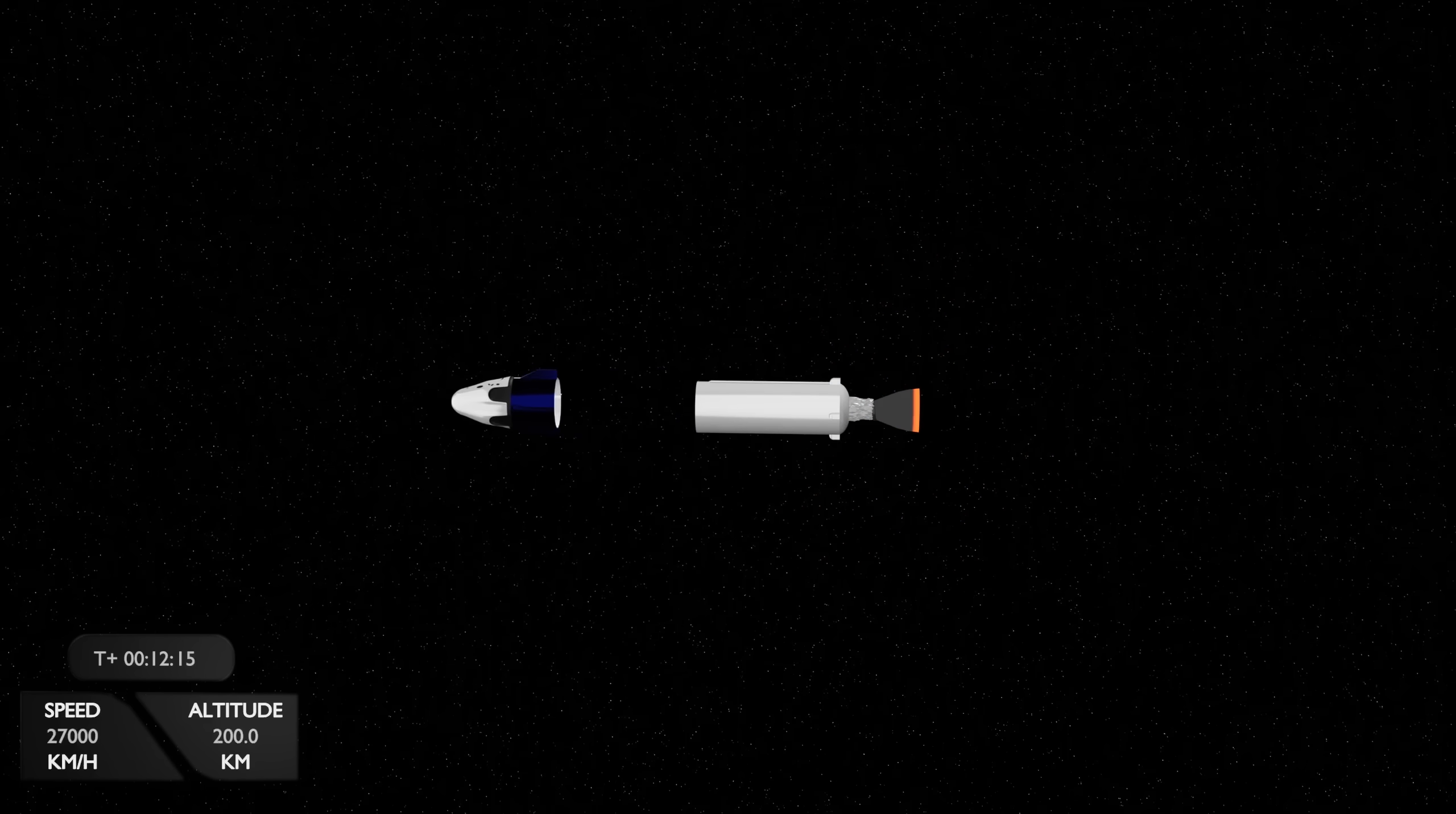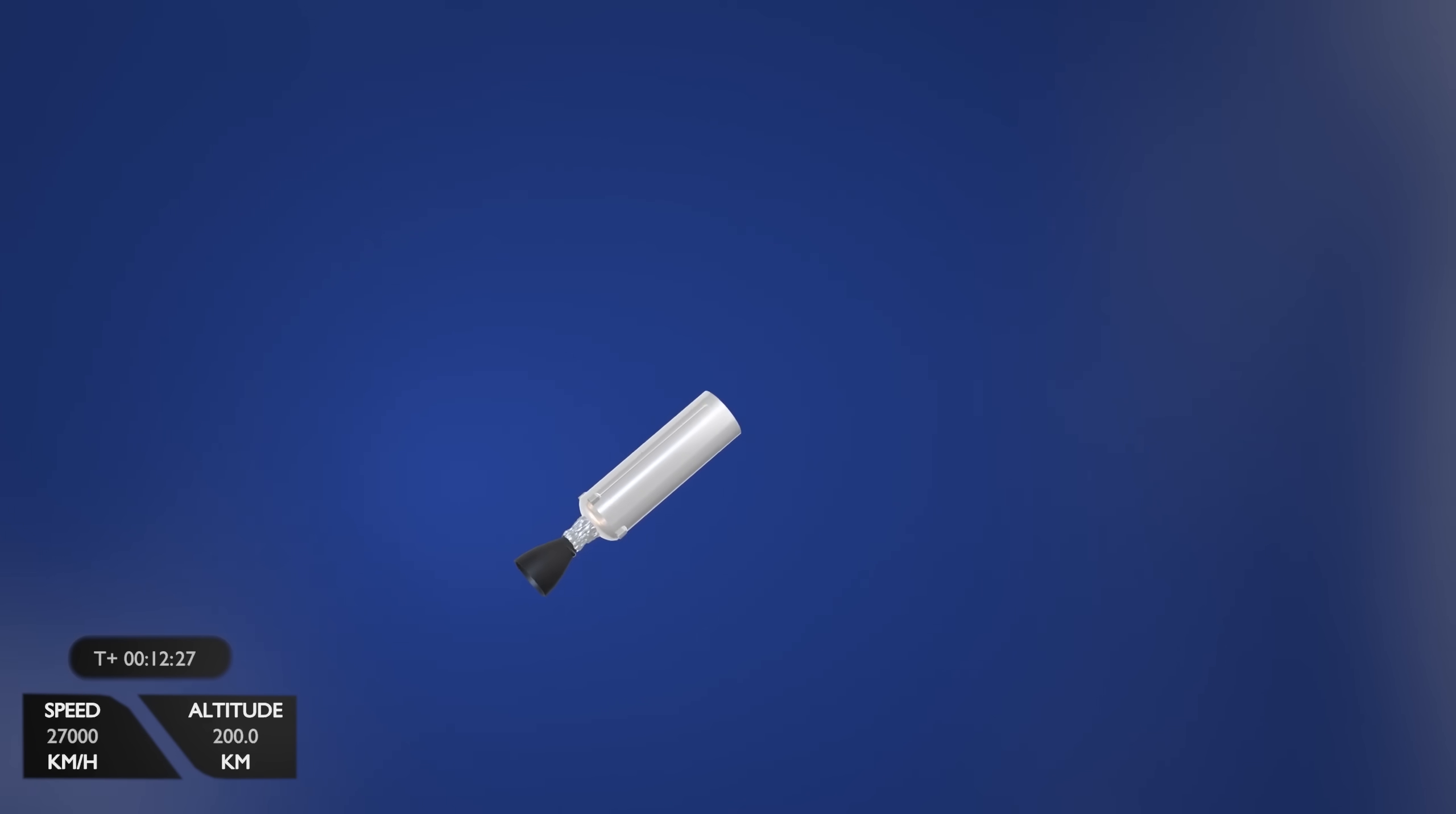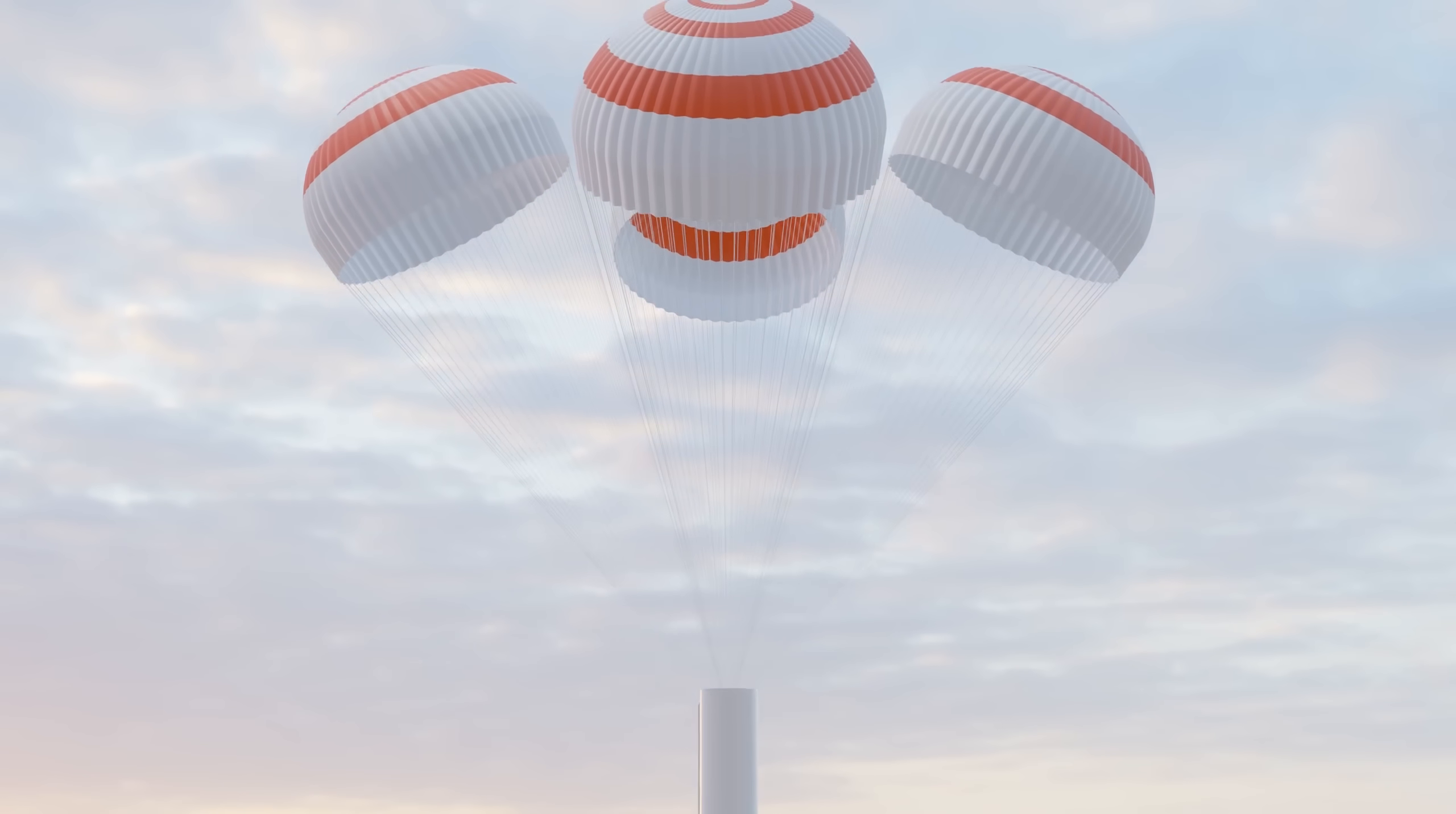So why does SpaceX recover the first stage but not the second? Well, looking back at the differences between the two stages at their times of separation, the second stage separates at orbital velocity, which is four times faster than the speed of the first stage at its separation. If the second stage entered the Earth's atmosphere at this speed, it would burn up through friction from the air it would push through. Refiring its vacuum engine to lower its velocity would only work until the engine is in the atmosphere, where it would be grossly overexpanded, and would be damaged through flow separation. Additionally, any weight that is brought onto the second stage through efforts to recover it, like heat shields, parachutes, or fuel reserves, would force the subtraction of weight from the payload's capacity.